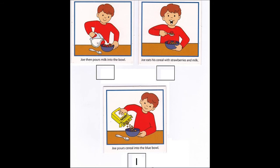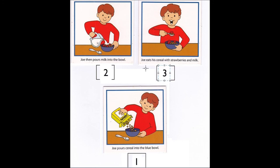Now where would number two go? What happens next? Number two would go in this picture here — Joe then pours milk into the bowl. And that would mean number three would come under this picture — Joe eats his cereal with strawberries and milk. That is the last step.